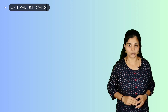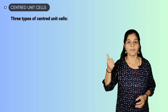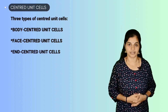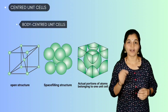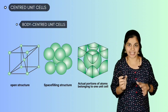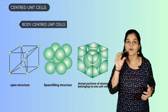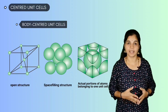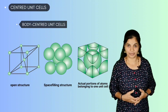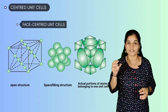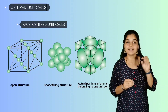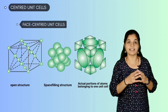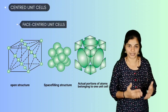Centered unit cells are classified into three types: body-centered unit cells, face-centered unit cells, and end-centered unit cells. When a unit cell contains one constituent particle — which can be an atom, molecule, or ion — at its body center, in addition to those at the corners, it is known as a body-centered unit cell. If a constituent particle is present at the center of each face, in addition to those at the corners, those unit cells are known as face-centered unit cells.